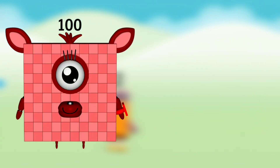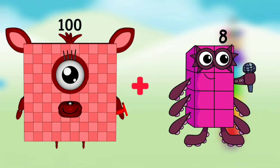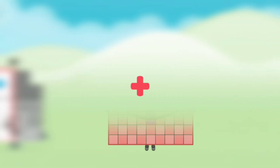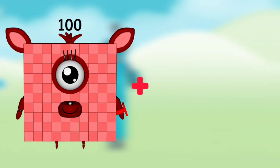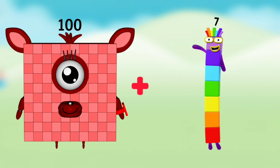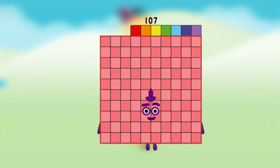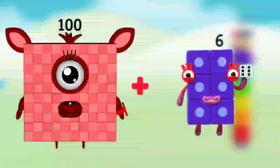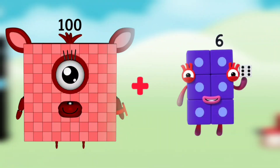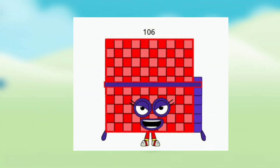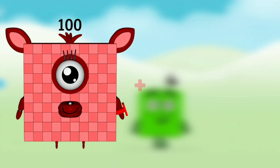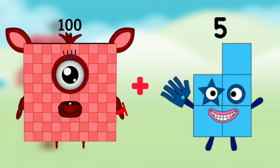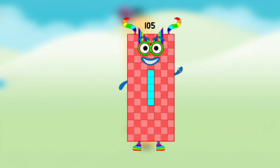Number Blocks 100 plus Number Blocks 8 equals Number Blocks 108. Number Blocks 100 plus Number Blocks 7 equals Number Blocks 107. Number Blocks 100 plus Number Blocks 6 equals Number Blocks 106. Number Blocks 100 plus Number Blocks 5 equals Number Blocks 105.